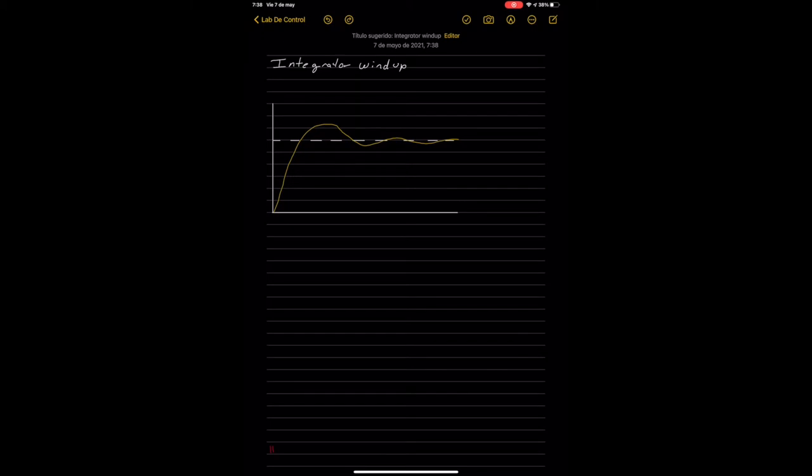To begin with this topic we define an integral wind-up as the situation in PID controllers where a large change in set points occurs and the integral term accumulates a significant error during the rise. Therefore it creates an excess in overshooting, as we can see it in the image.